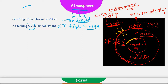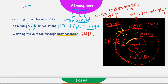These are the two points how atmosphere is providing protection to Earth. The third point is warming the surface through heat retention. Heat retention is also called greenhouse effect. Greenhouse effect is the quality of atmosphere where atmosphere is trapping heat that Earth radiates. Now if you look at this diagram again, Earth is receiving some solar radiations.